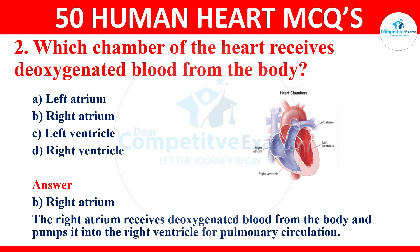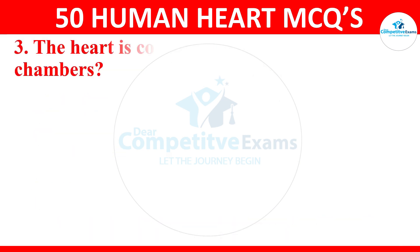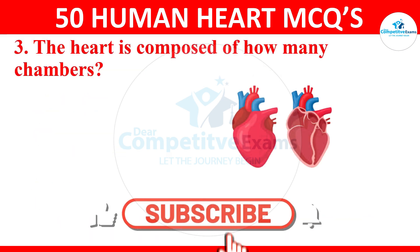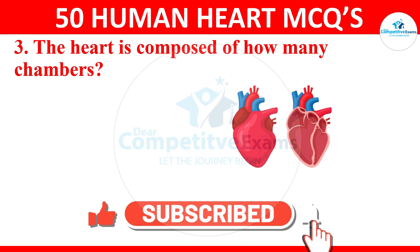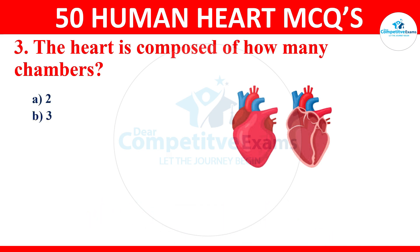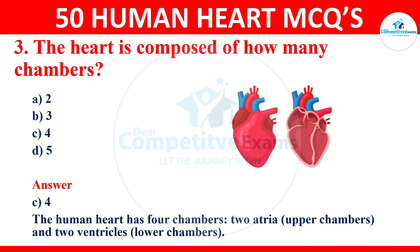Question 3: the heart is composed of how many chambers? Your options are 2, 3, 4, or 5. The right answer is 4. The human heart has 4 chambers — 2 atria (upper chambers) and 2 ventricles (lower chambers).